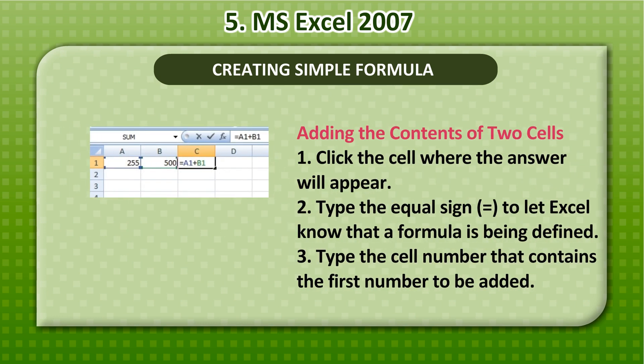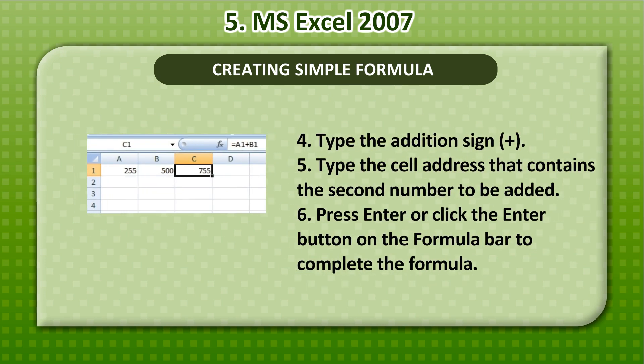Adding the contents of two cells: 1. Click the cell where the answer will appear. 2. Type the equal sign to let Excel know that a formula is being defined. 3. Type the cell number that contains the first number to be added. 4. Type the addition sign. 5. Type the cell address that contains the second number to be added. 6. Press Enter or click the Enter button on the formula bar to complete the formula.